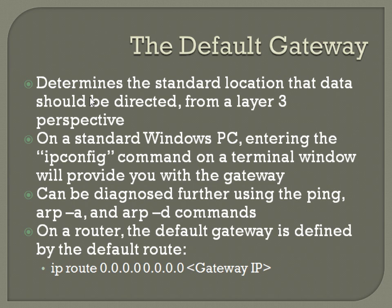On a router, the default gateway is defined by the default route, which is a static route. The format is: IP route, then the first set of zeros for the IP address, and the second set of zeros for the subnet mask. That's basically saying all IPs, then going to another IP address listed here, which would be the next hop.